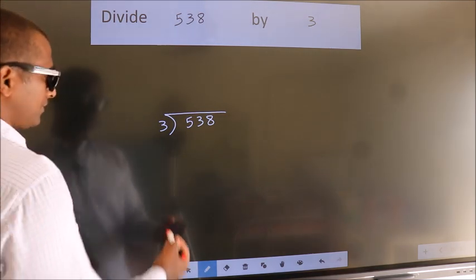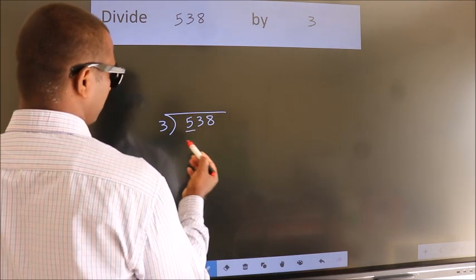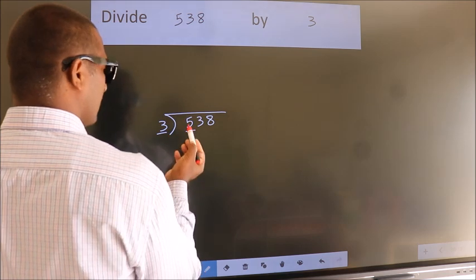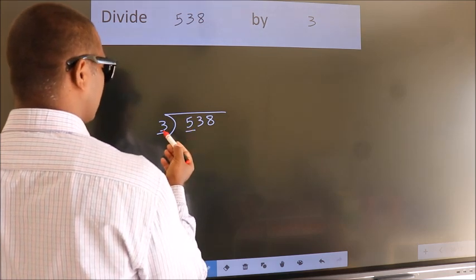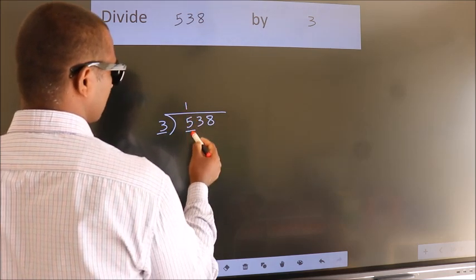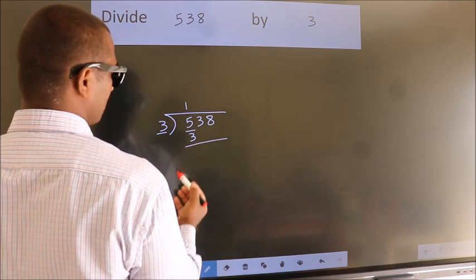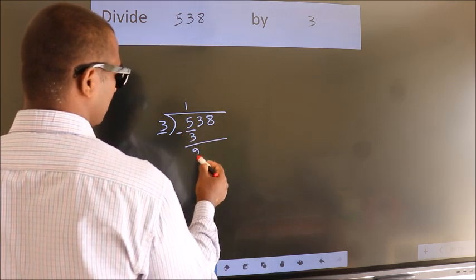Next. Here we have 5. Here 3. A number close to 5 in 3 table is 3 1s 3. Now we should subtract. We get 2.